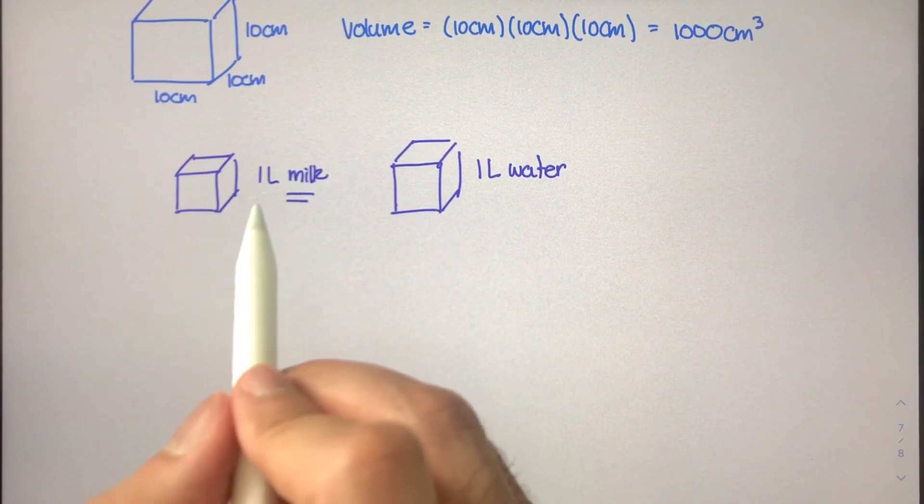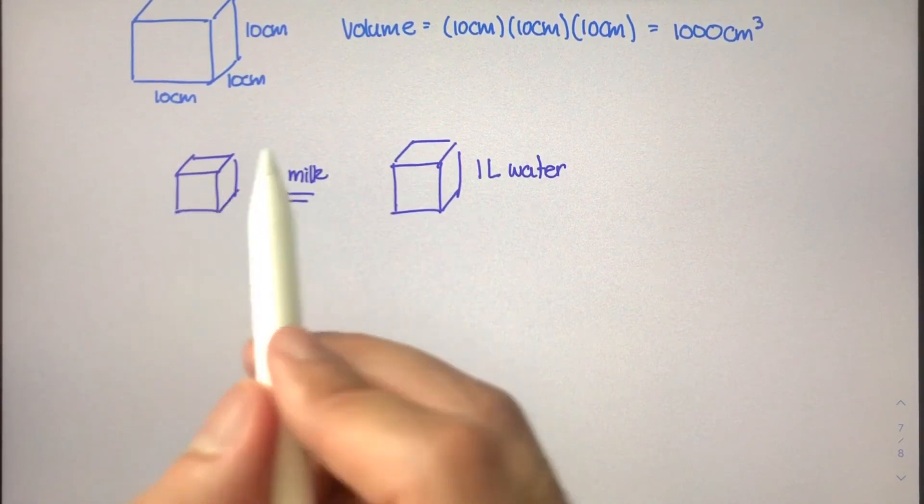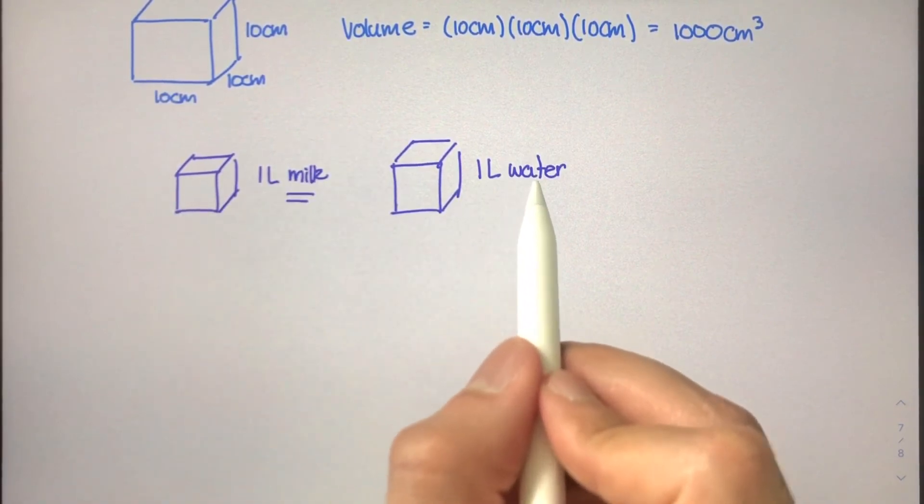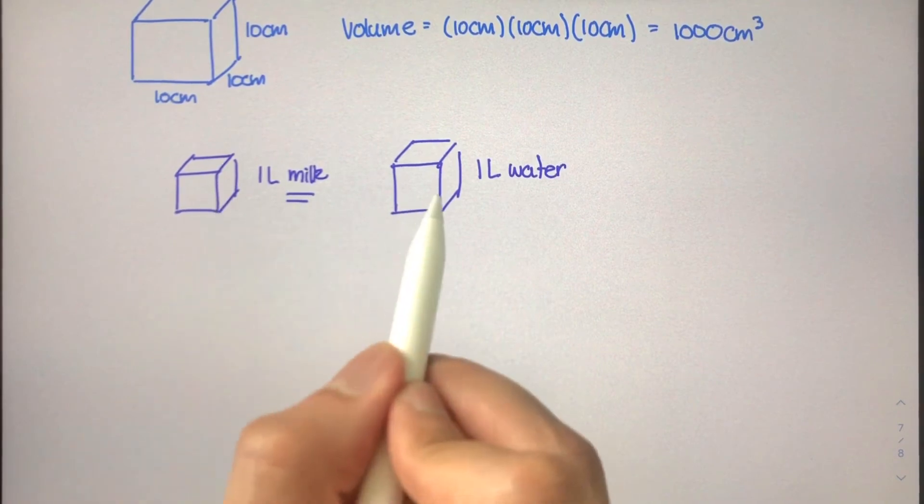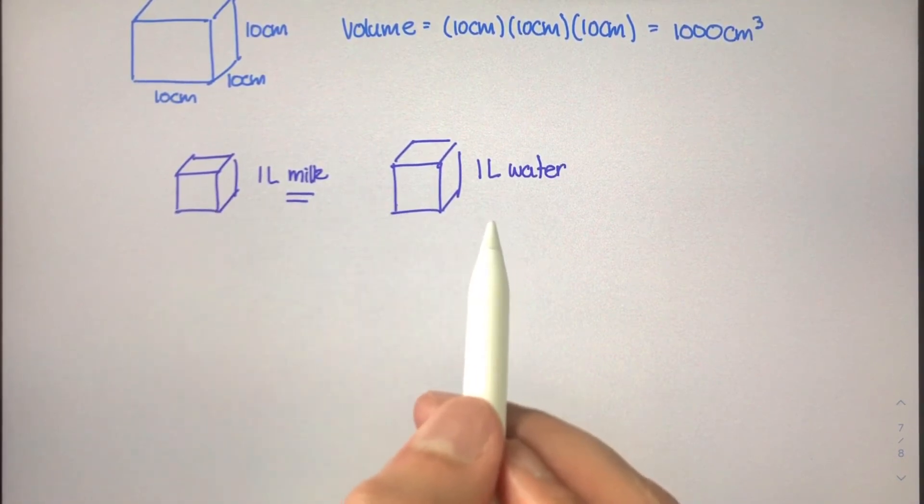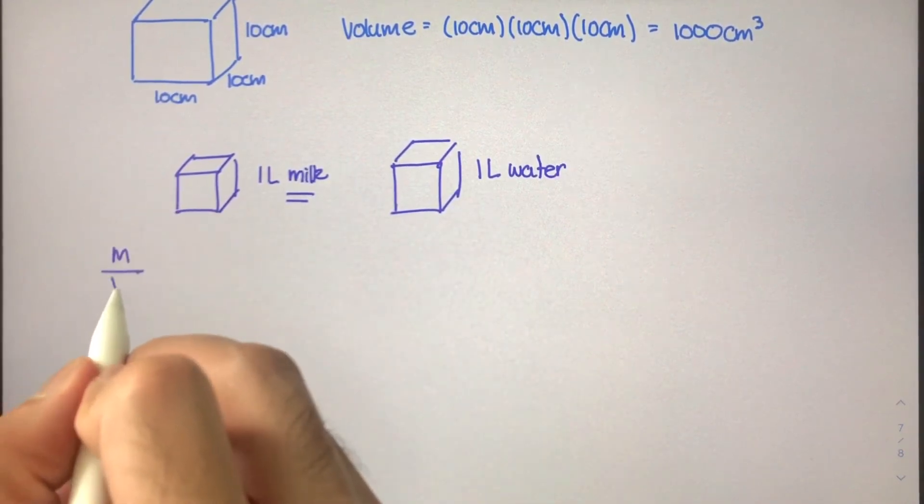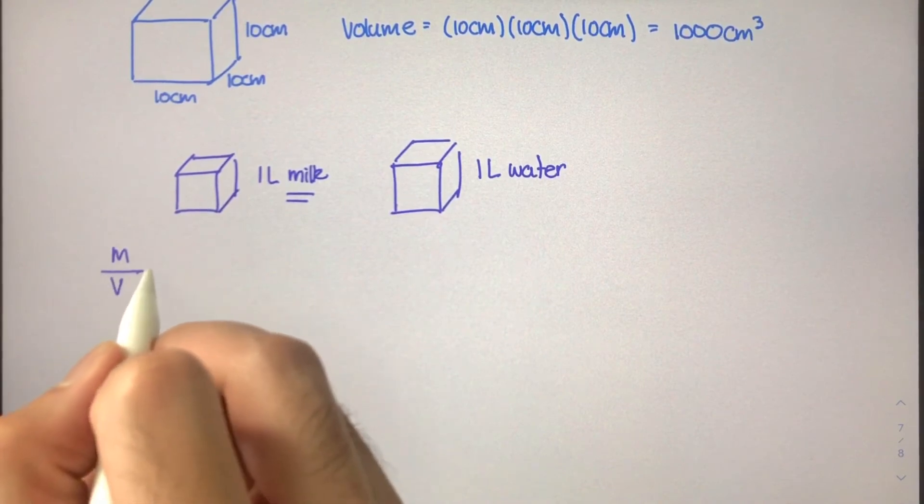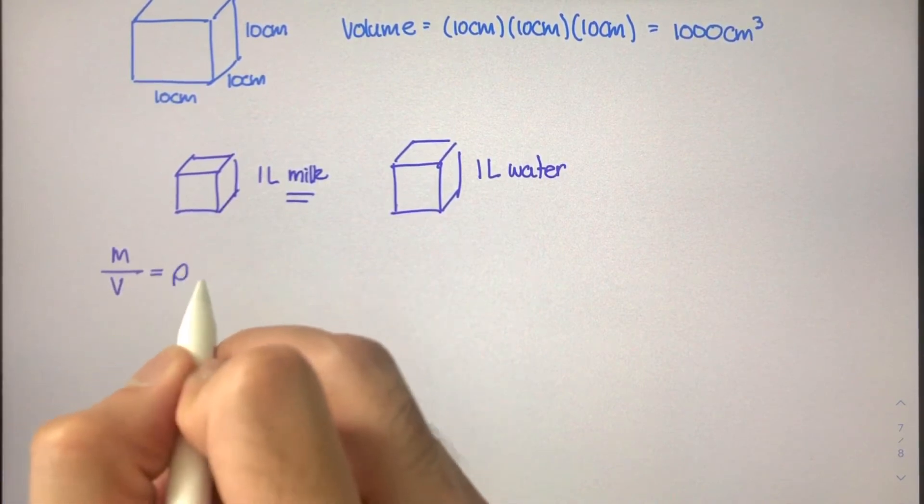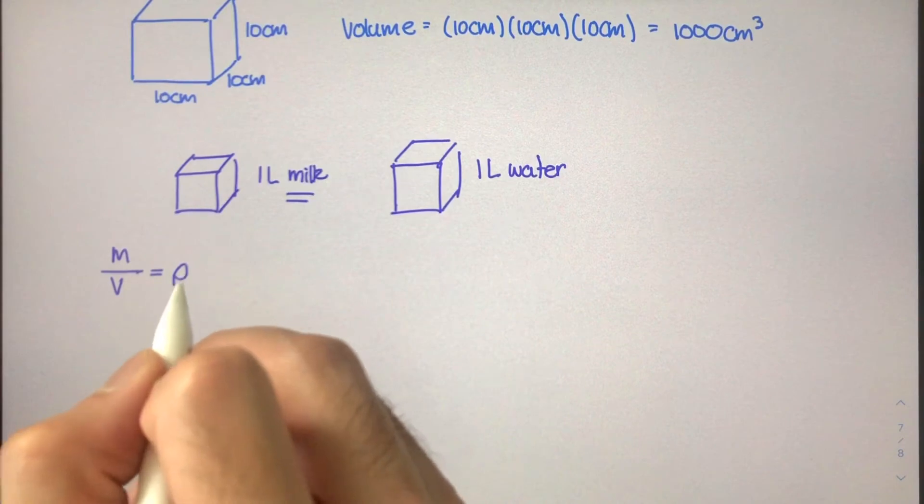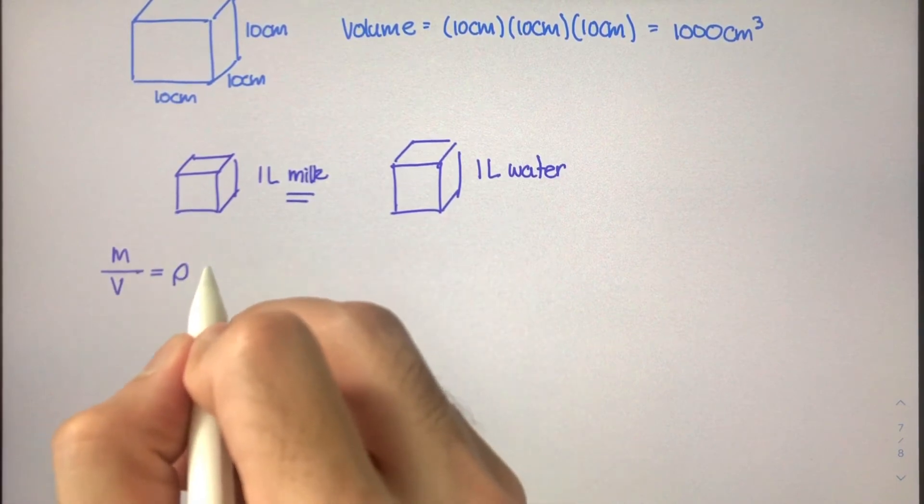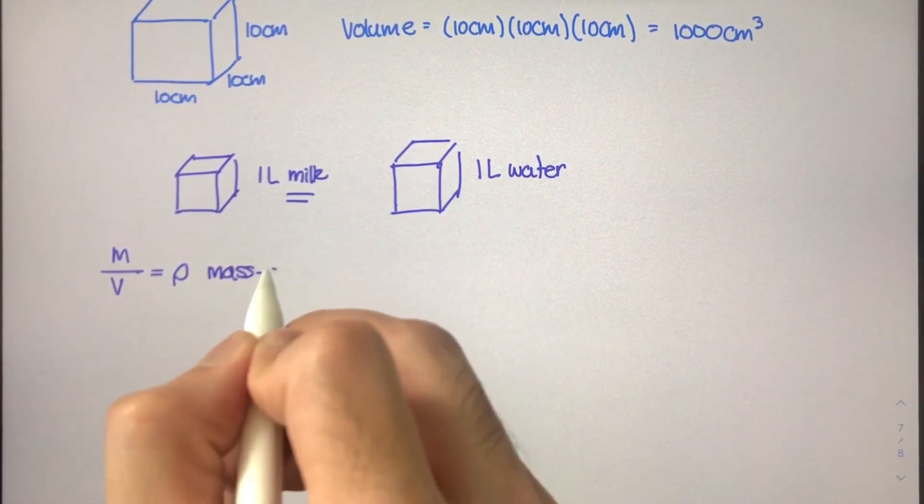Now, if we took the mass of milk and the mass of water and we divided it by their respective volumes, we would actually get two different answers. So if we took the mass of one liquid or fluid and we divided it by the volume that it takes up, we get something that's known as - this is the Greek character rho - this is known as mass density.